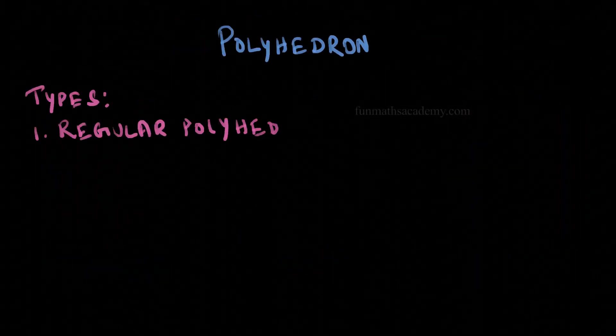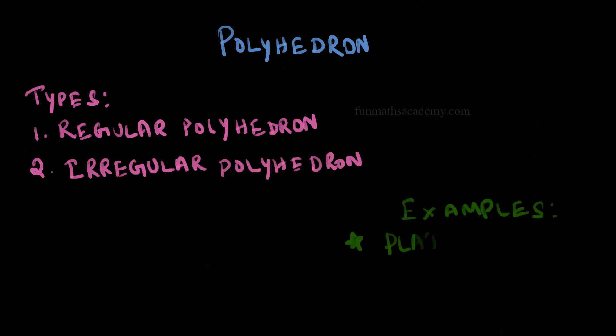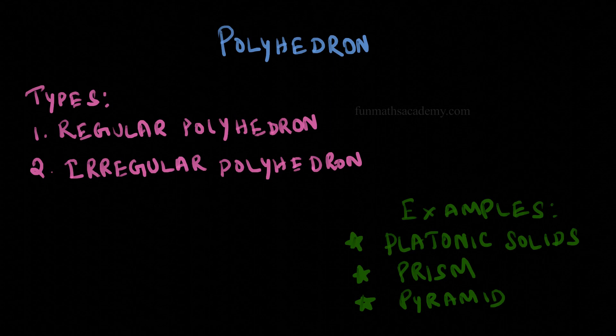So in this video, we checked out what is a polyhedron, its types, and few examples. While in the next video, we shall check out simple polyhedrons like cube and net of a cube. If you have liked this video, hit the like button.